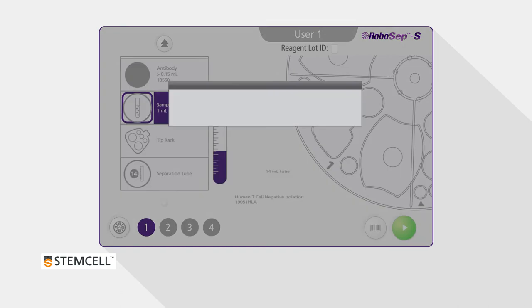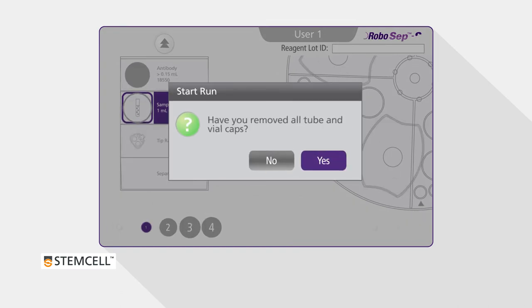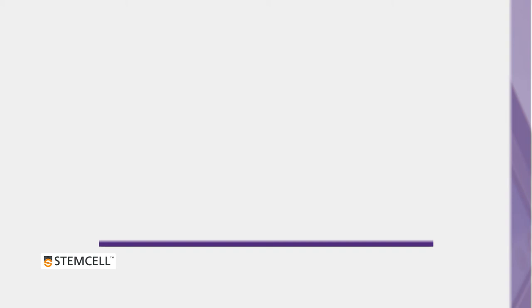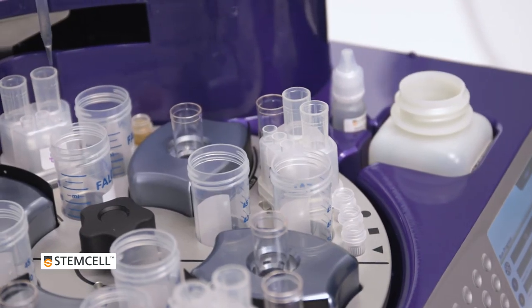The next screen will ask if you have removed all vial and tube caps. Click Yes. RoboSep will now run the selected protocols.